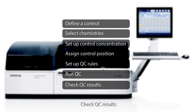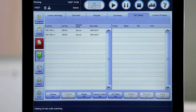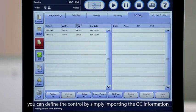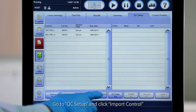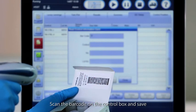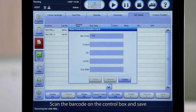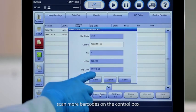If you use Mindray Internal Control, you can define the control by simply importing the QC information. Go to QC Setup and click Import Control. Scan the barcode on the control box and save. To define more controls, scan more barcodes on the control box.